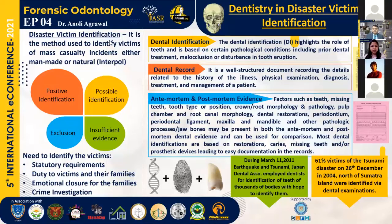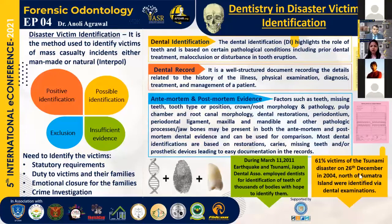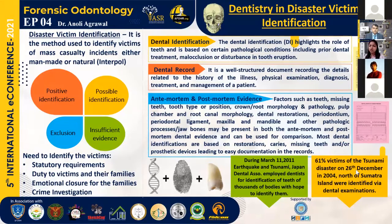Moreover, dental data can also be used to determine an individual's personal data such as age, race, and gender. During a mass disaster, the pink form is the post-mortem data and the yellow form is the ante-mortem data, and comparison of these is used to establish the identity of a victim. Factors such as missing teeth and tooth type can be used for comparison. Most dental identifications are based on restorations, caries, missing teeth, or prosthetic devices, which are easily documented in dental records. Individuals with loss of all teeth can also be identified based on the anatomy of the jaw bone or dentures with various shapes, sizes, manufacturers, and compositions. Dental anomalies like missing teeth, supernumerary teeth, and extra cusps can also form the basis for identification of an individual.